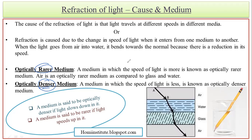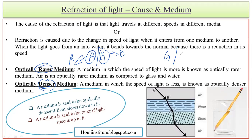But if we compare glass and diamond, then glass becomes the rarer medium and diamond becomes the denser medium. So it is not necessary that a single medium is always rarer or always denser — it depends on what you are comparing it to. You have to understand which medium we are talking about and according to that, the condition of rarer and denser will change.